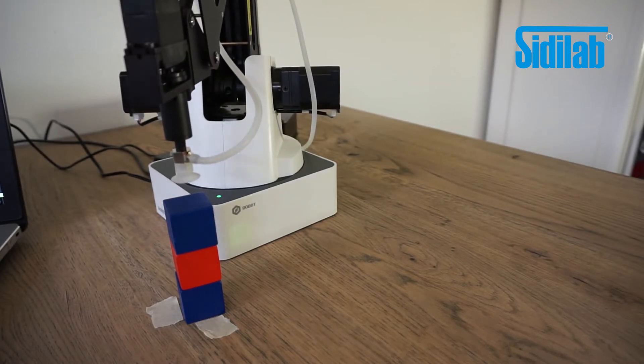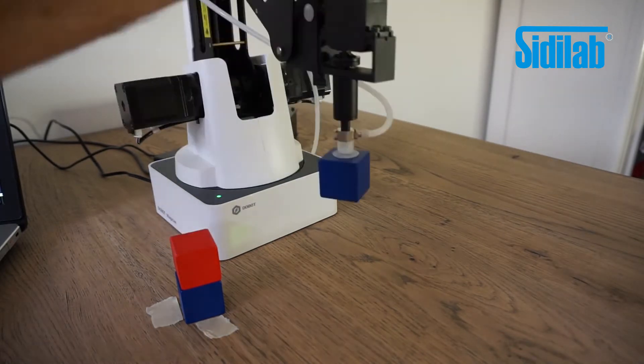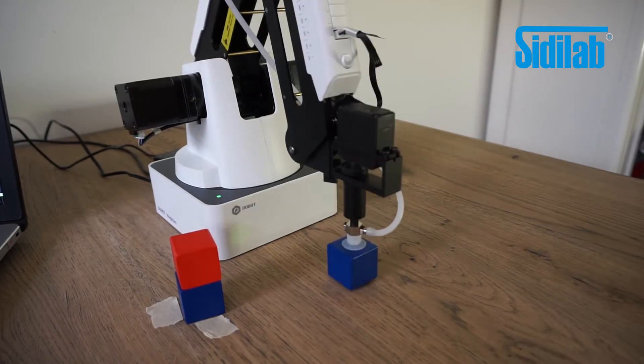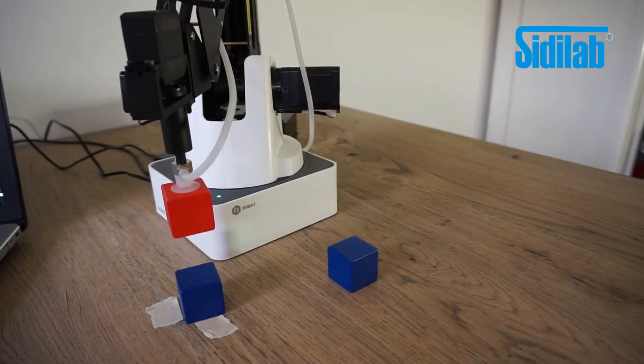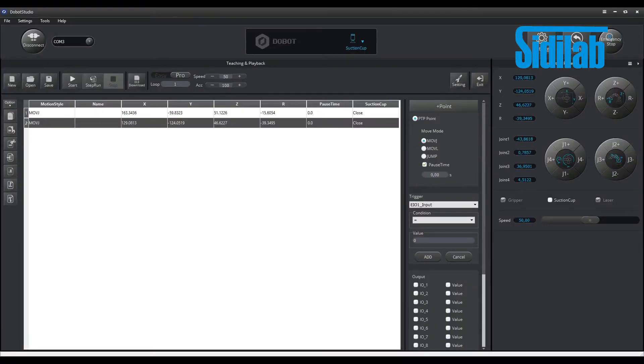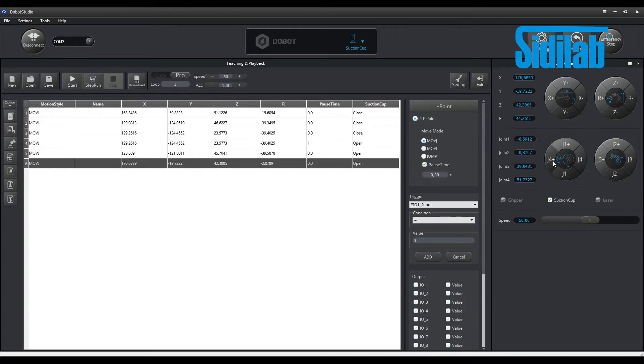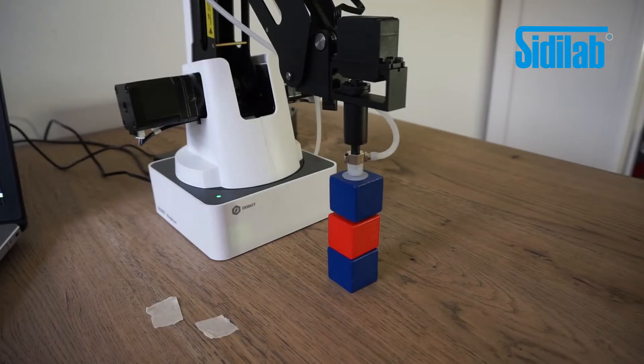When performing a simple pick and place sequence you can add coordinates and indicate if the end effector needs to be activated. Also delay times can be set at each point which are useful when picking up objects with a vacuum cup since it takes some time for the vacuum to reach a sufficient level. Usually one second is enough. You can simply move the arm to each coordinate and add a new waypoint to the list.